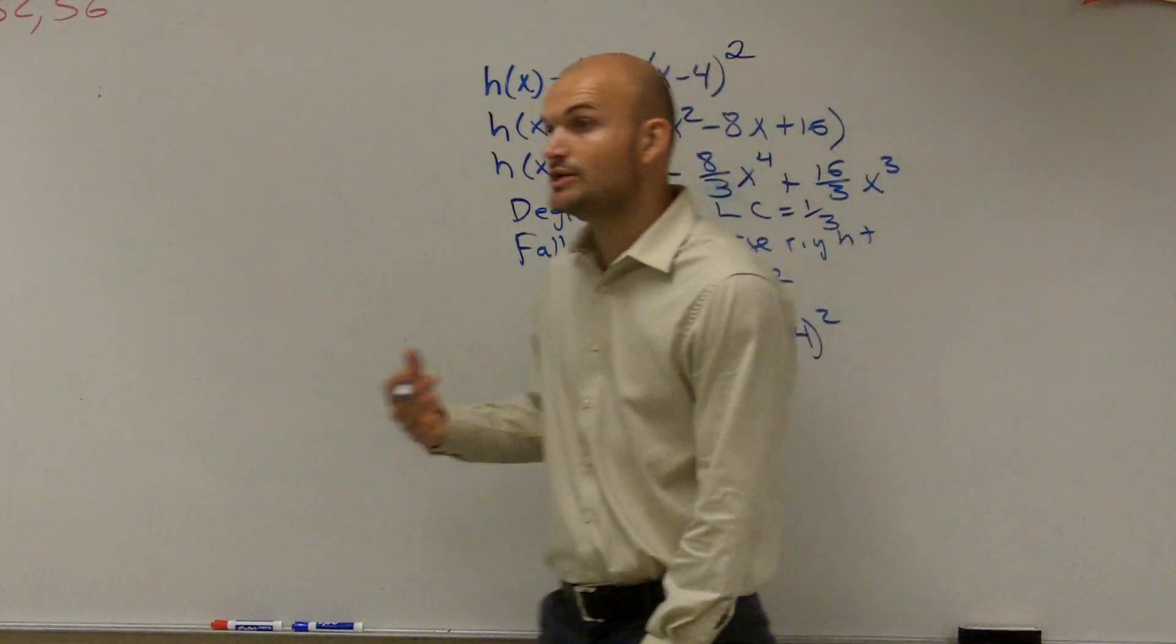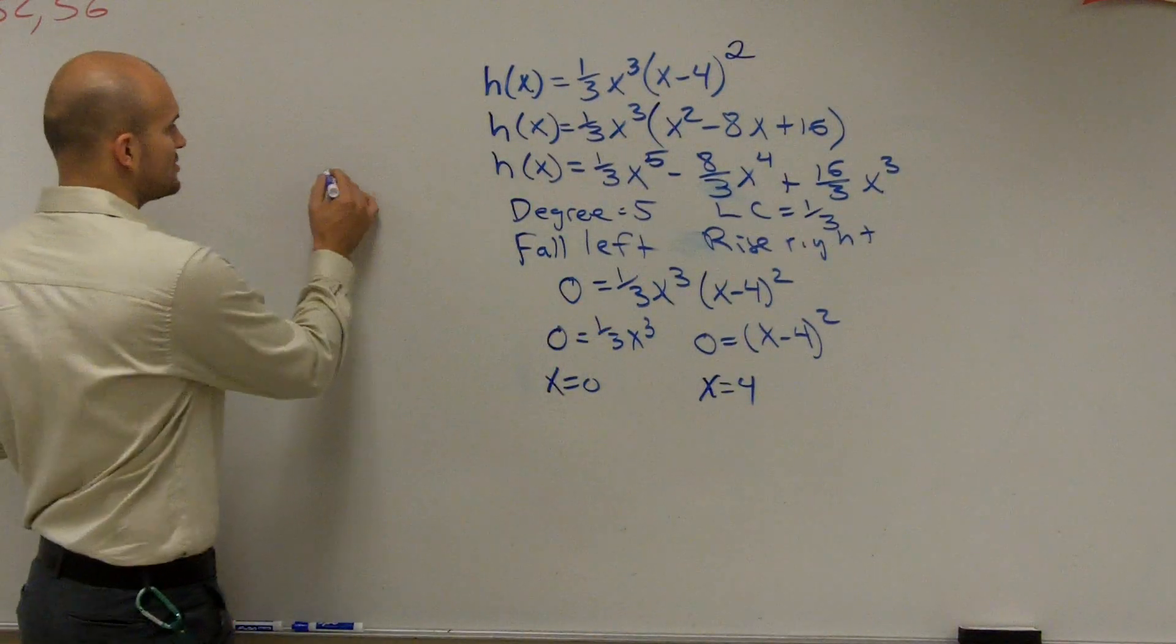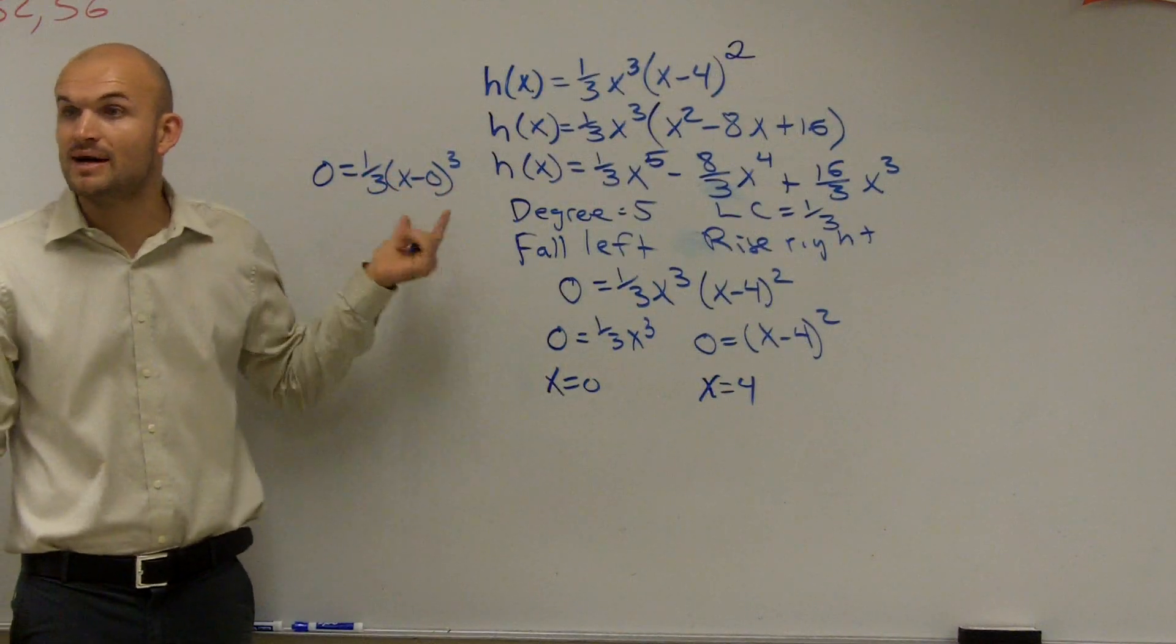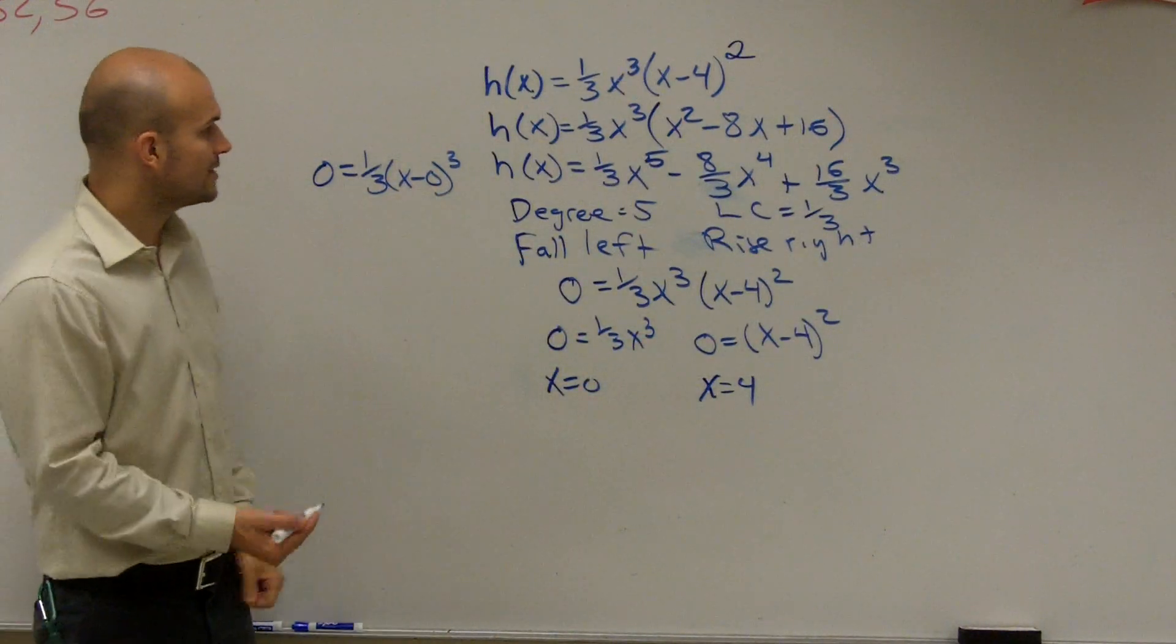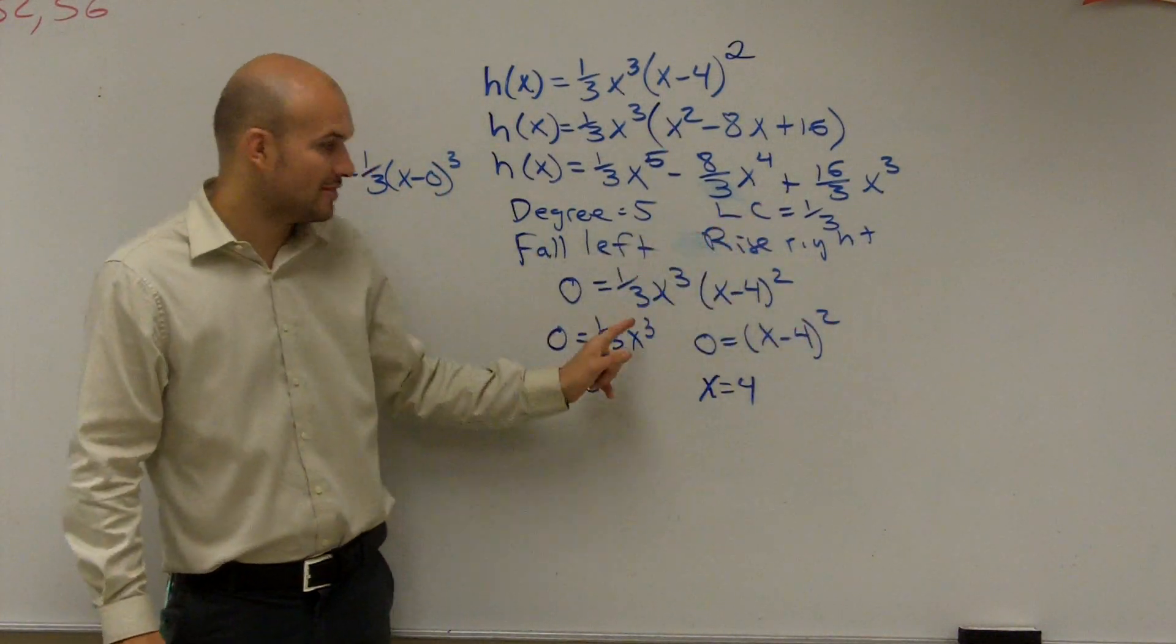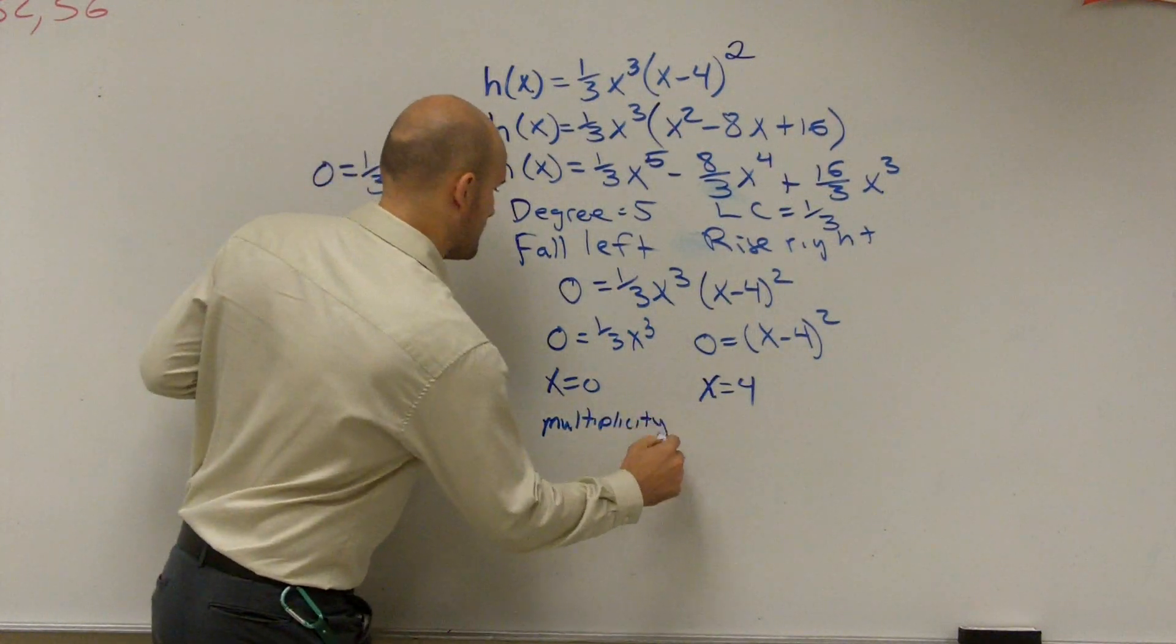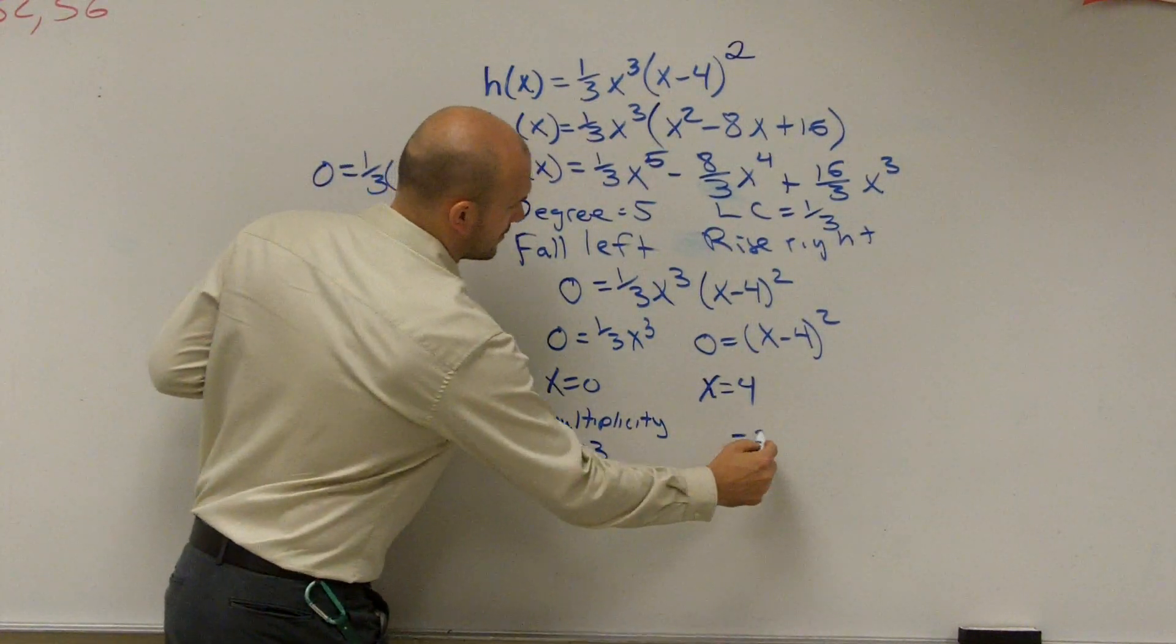However, the important part about this is we need to determine the multiplicity. And multiplicity is going to be your exponent of your factor, and that's why I said you could rewrite this as 0 equals one-third x minus 0 cubed. Because a lot of times when I'm talking about my factors, we're looking at it as the x minus h, you know, x minus some value. So if you have no value there, you can always write in your 0. So now we look at what are my exponents of my two factors. The exponents are going to be 3 and 2. So that means my multiplicity, this one's going to have a multiplicity of 3, and this one's going to have a multiplicity of 2.